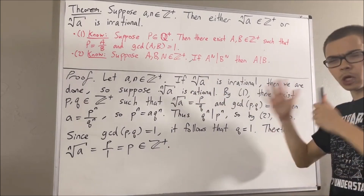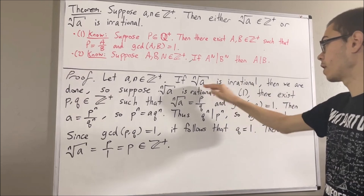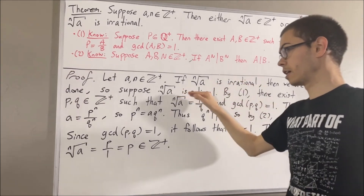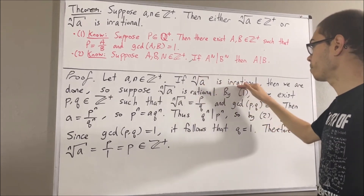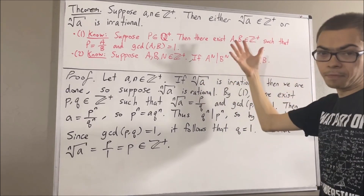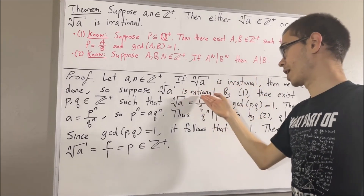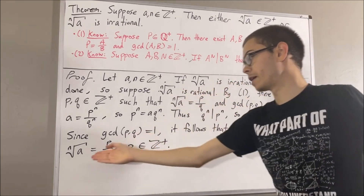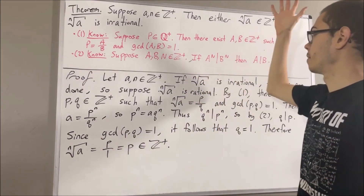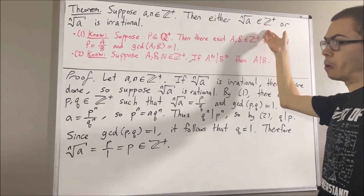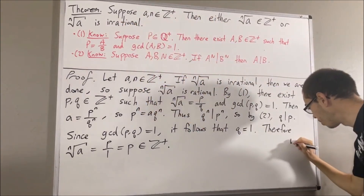So, putting this all together, we considered two cases: either the n-th root of a is irrational, or the n-th root of a is rational. We observed that if the n-th root of a is irrational, then we're done — there's nothing more to prove. But in the other case where the n-th root of a is rational, we found that the n-th root of a must be a positive integer. So we have shown that either the n-th root of a is a positive integer or the n-th root of a is irrational. This completes the proof.